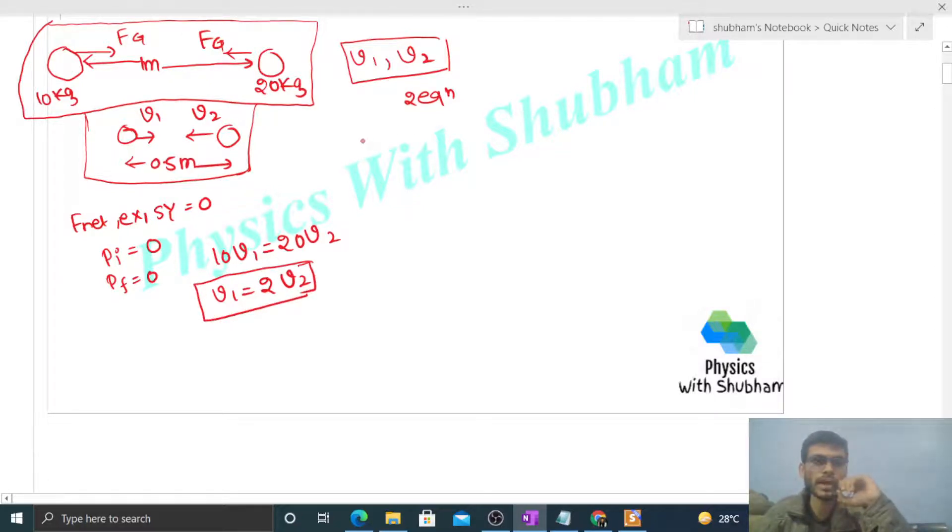In this system, only conservative forces are doing work. You see, this gravitational force of attraction is a conservative force. So when only conservative forces do work, we can conserve the mechanical energy. Initial mechanical energy is equal to final mechanical energy.